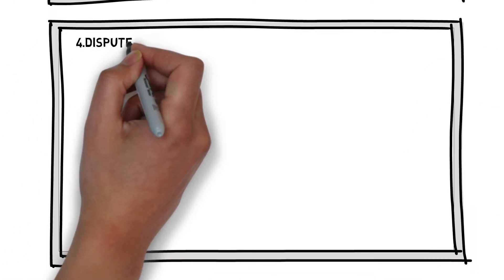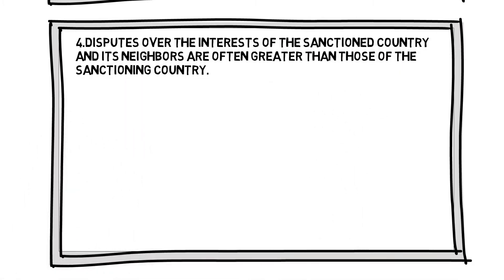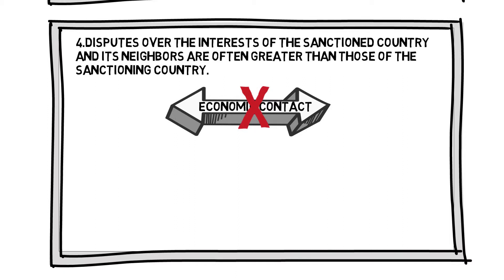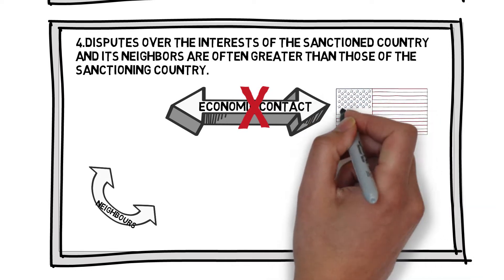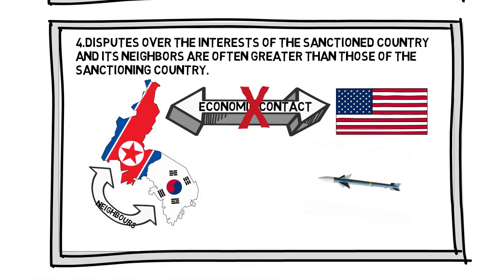Fourth, disputes over the interests of the sanctioned state and its neighbors are often greater than those of the sanctioning state. For a variety of reasons, many sanctioned countries tend to lack economic contact with developed countries issuing sanctions, leading to economic sanctions that do not strike their core economic pillars quickly. On the contrary, the sanctioned countries and their neighboring countries have more common trade and political interests. For example, when economic sanctions had little effect, President Trump hinted at military action against North Korea, but South Korea protested against the use of force and even provided millions of dollars in humanitarian aid, because in the event of a war on the Korean Peninsula, South Koreans must be the first to suffer.